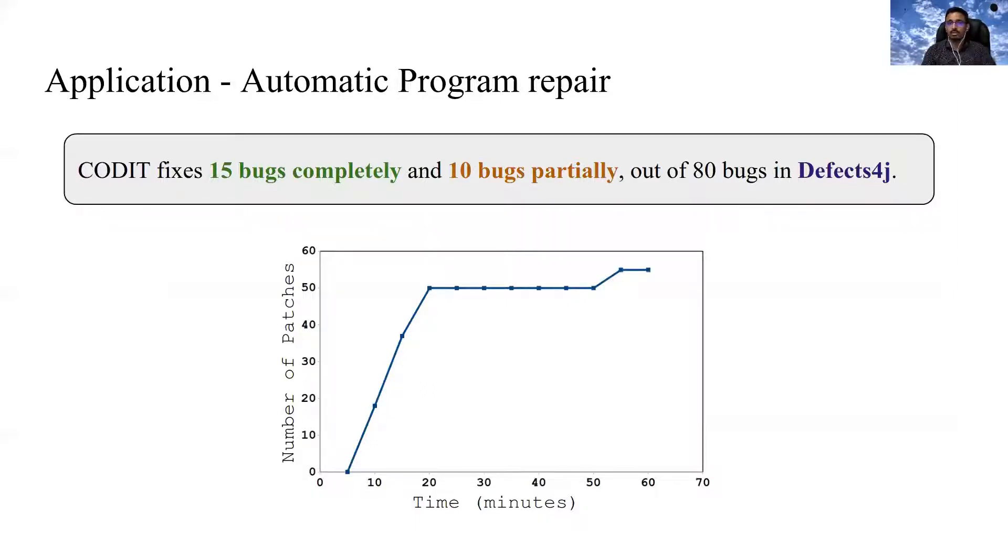CODIT successfully fixed 15 bugs completely and 10 bugs partially. And the graph shows how quickly CODIT can generate patches that pass the bug reproducing test cases. Within 20 minutes, CODIT generated patches for 50 bugs that pass at least the bug reproducing test cases.